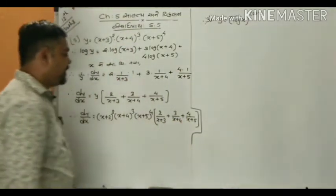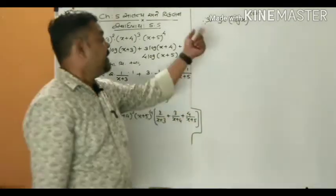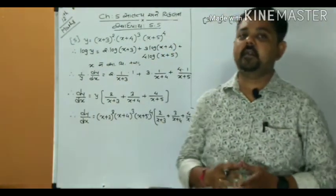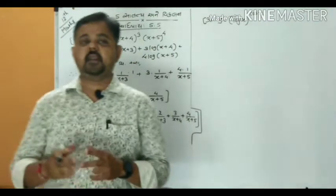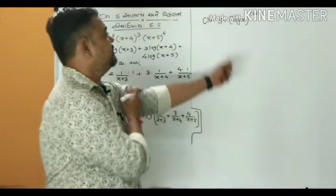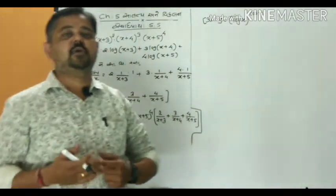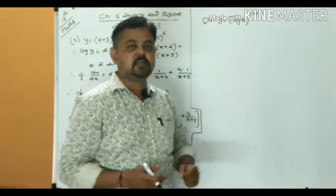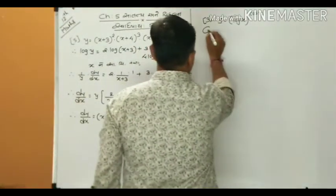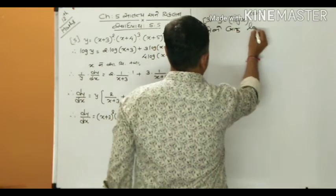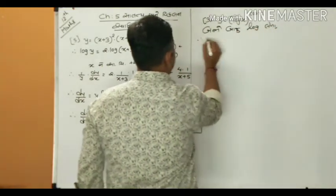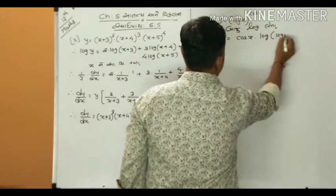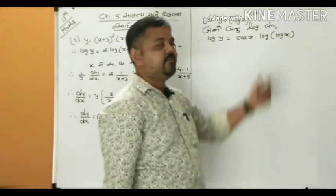So dy/dx has been found. Generally, when multiplication or division is present, apply log to convert into addition/subtraction form. For functions where x appears in the exponent — like x raised to x, x raised to y, or y raised to x — applying log is necessary. Next, example 3: y = (log x)^(cos x). Taking log: log y = cos x · log(log x).